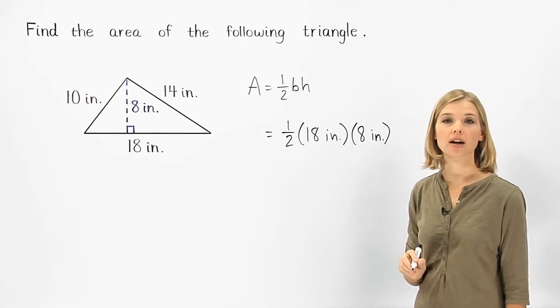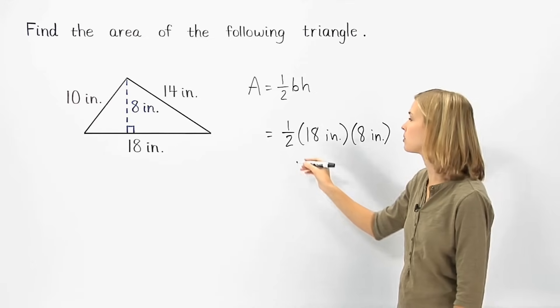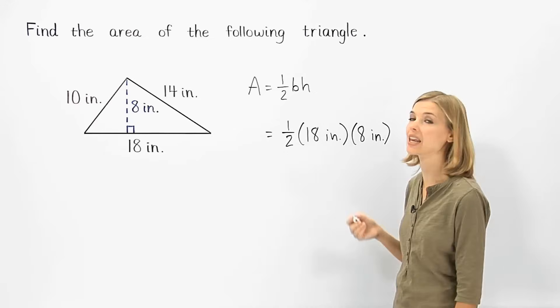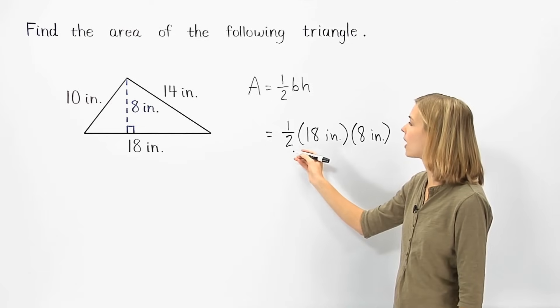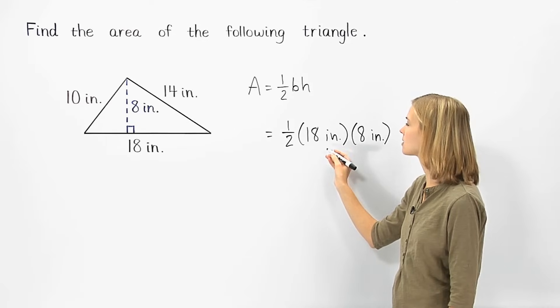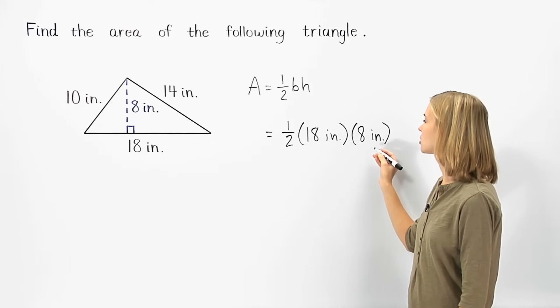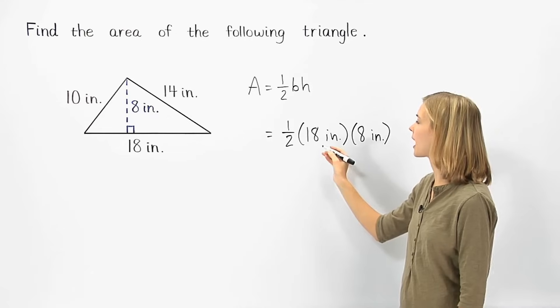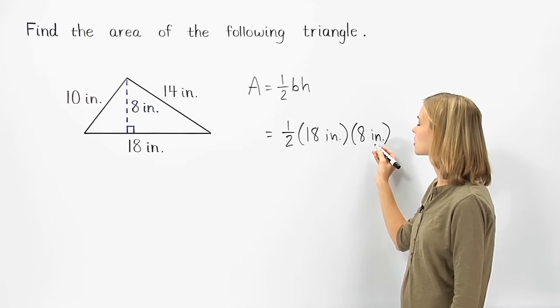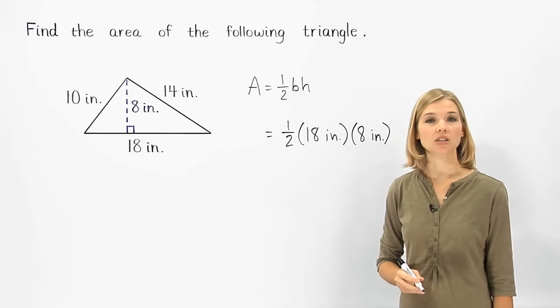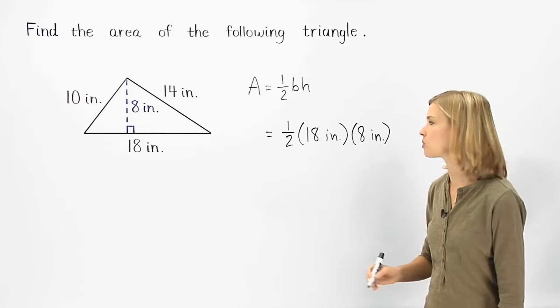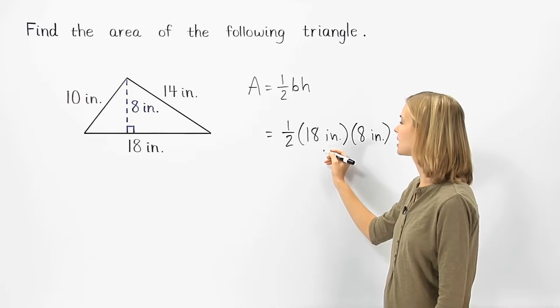Simplifying from here, it's important to understand that we can multiply these numbers together in any order we want. For example, we can multiply one-half by 18 inches, then multiply by 8 inches, or we can multiply 18 inches by 8 inches, then multiply by one-half. The easiest way to do this problem is to multiply one-half by 18 inches.